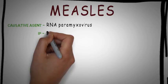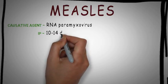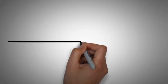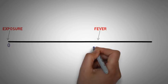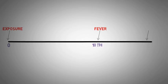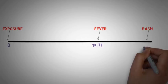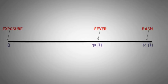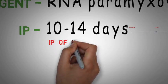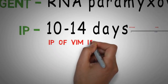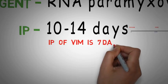What is the incubation period of measles? It is 10 to 14 days. If you consider day 0 as the point of exposure, then fever occurs on day 10 and rash occurs on day 14. Remember, the incubation period of vaccine-induced measles is only 7 days.